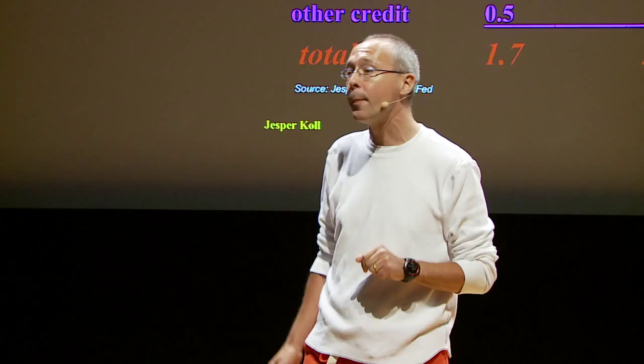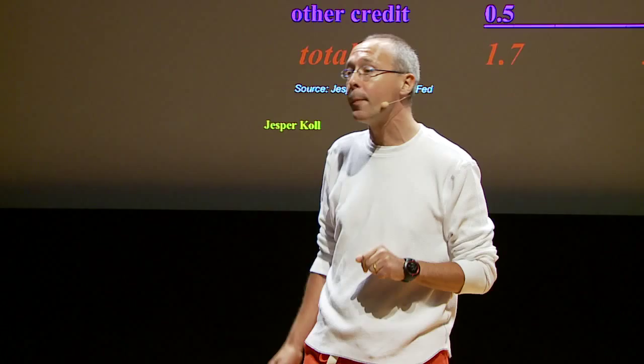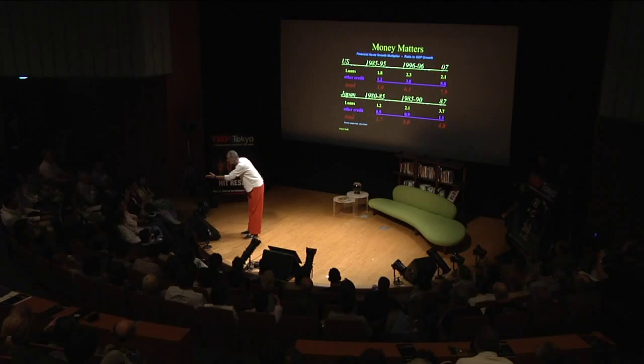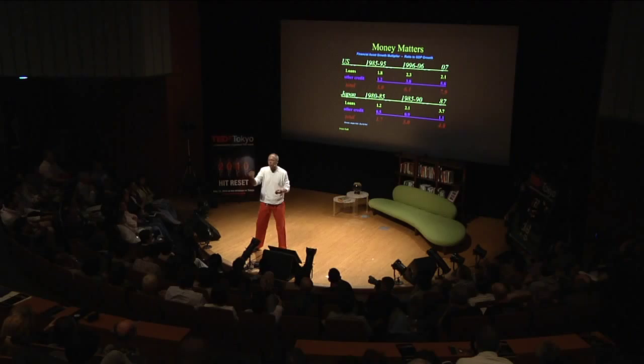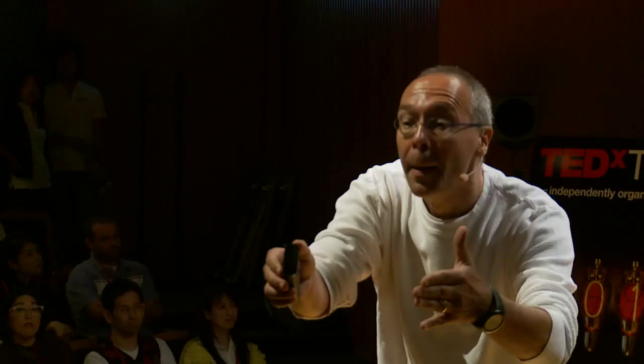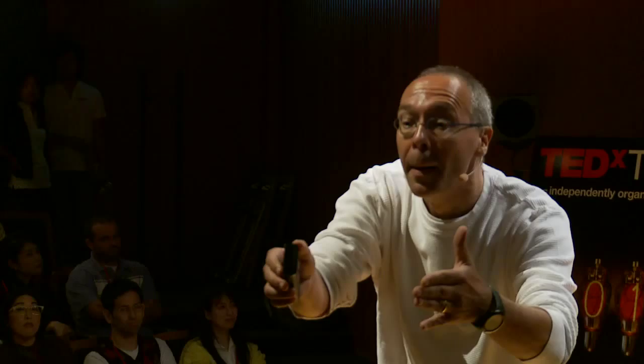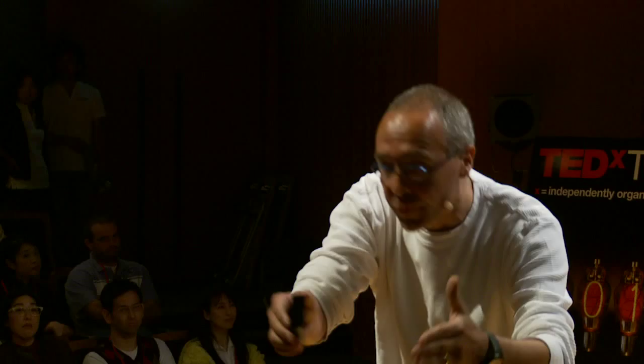The third difference, which is very important — Japan's bubble: who owned the assets? It was all Japanese. There was very little international finance in the 1980s, very little American or European banking activity. It was Japanese bankers lending to Japanese people. When the bubble collapsed, who suffered? It was just the Japanese.